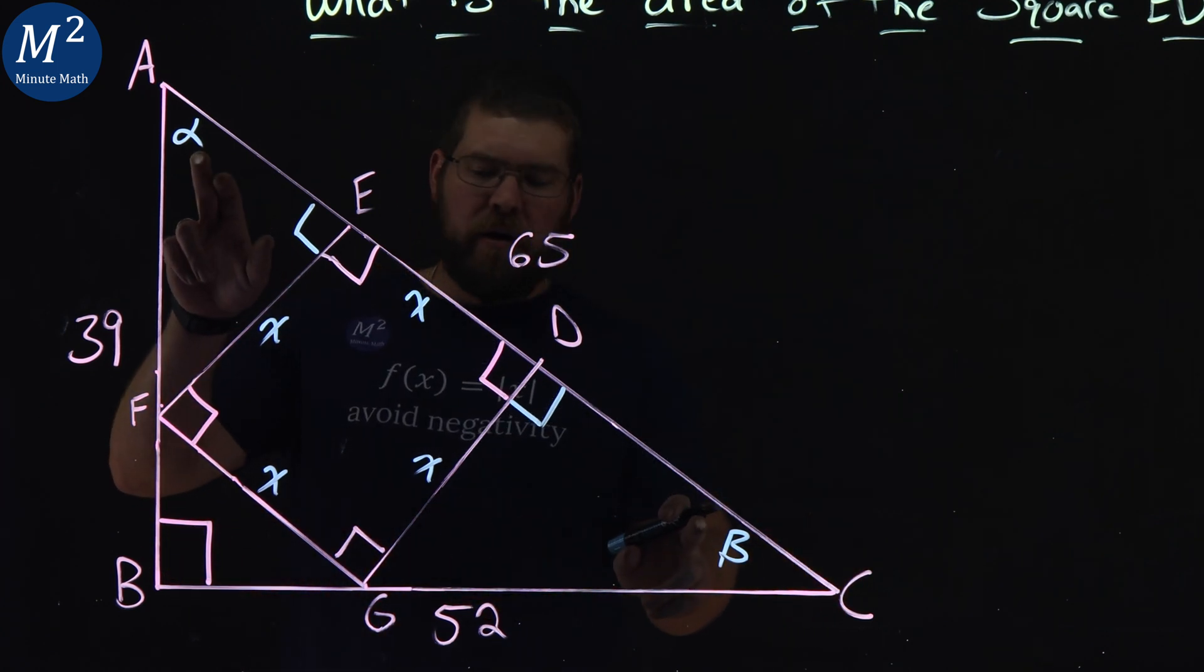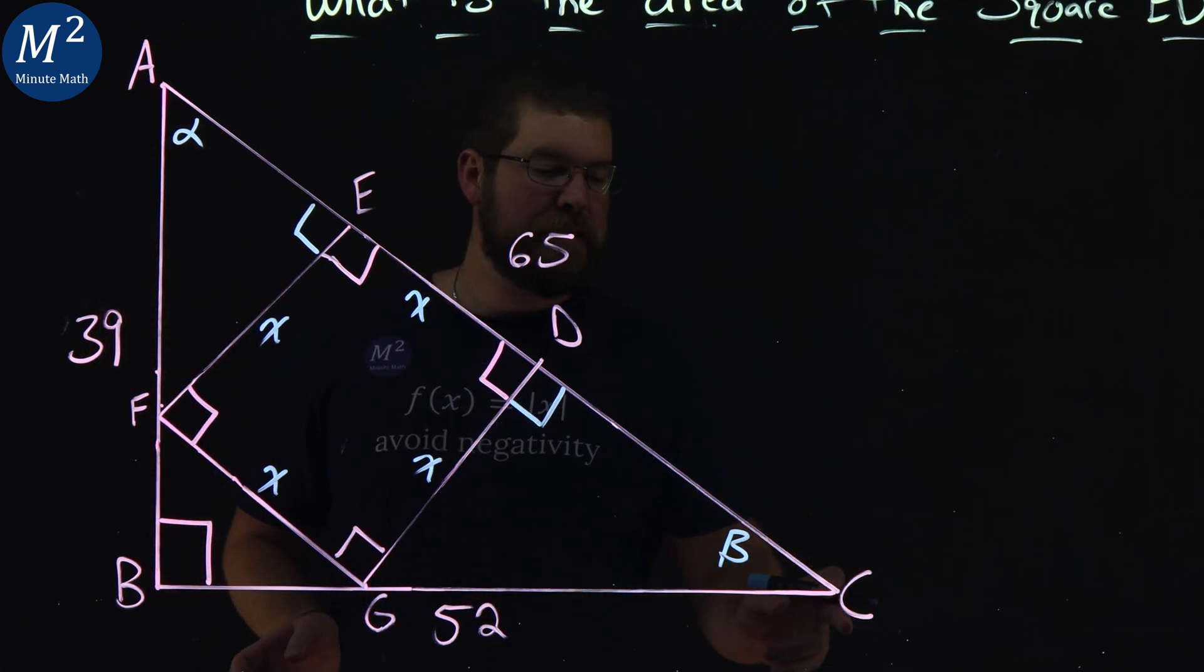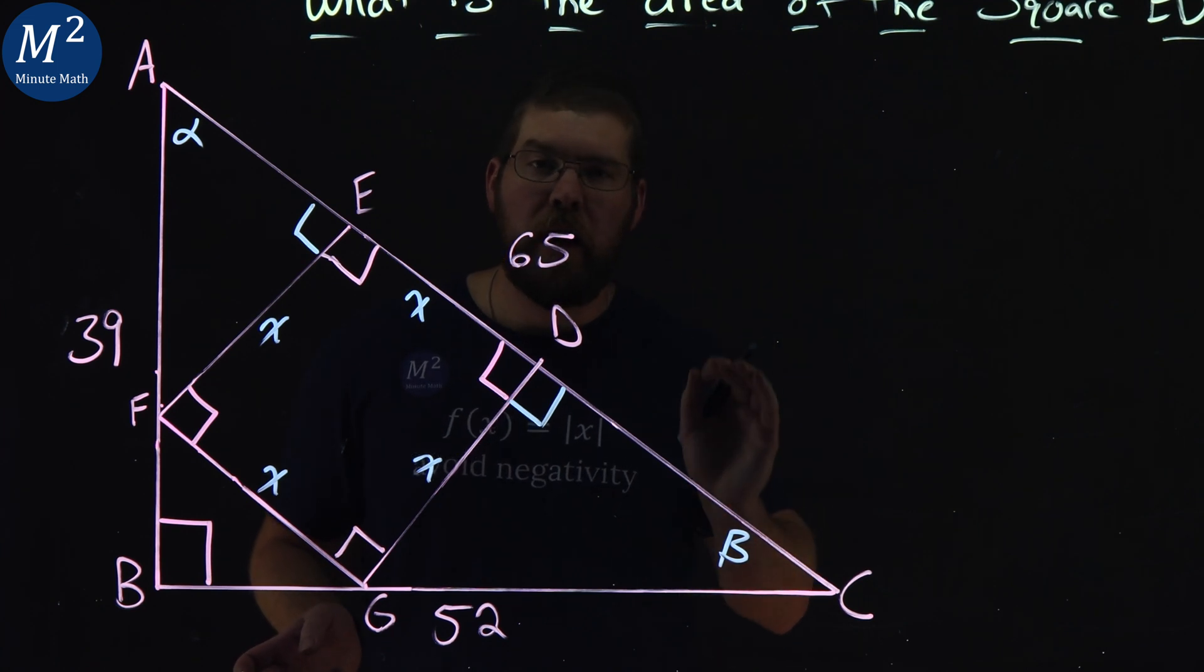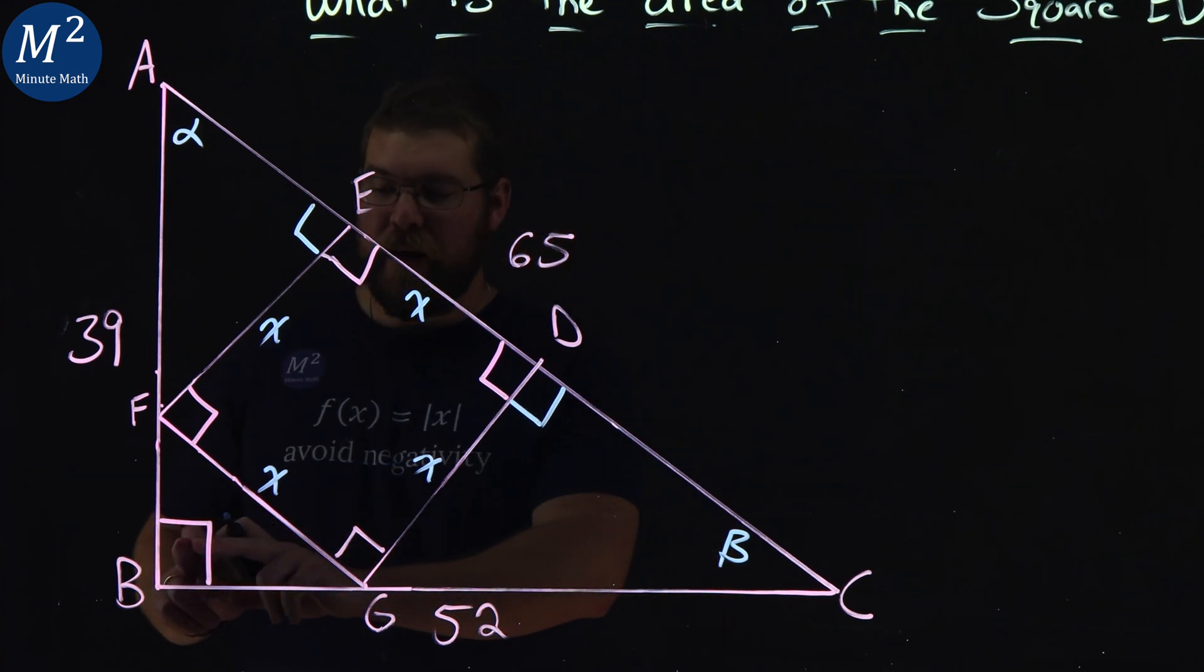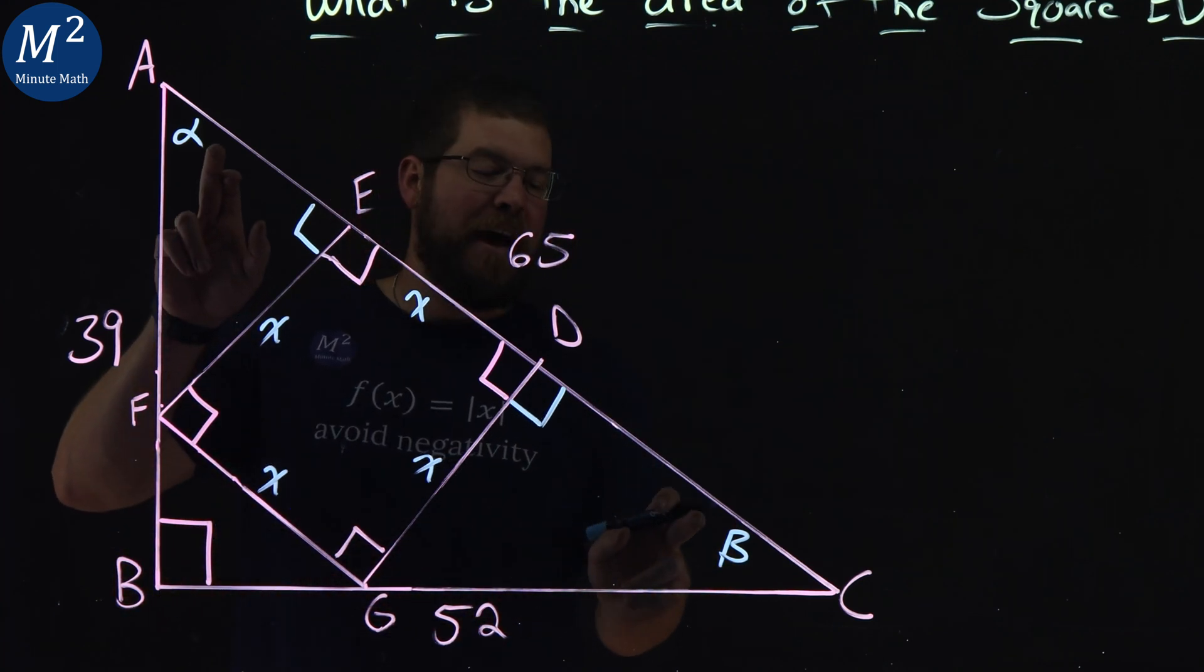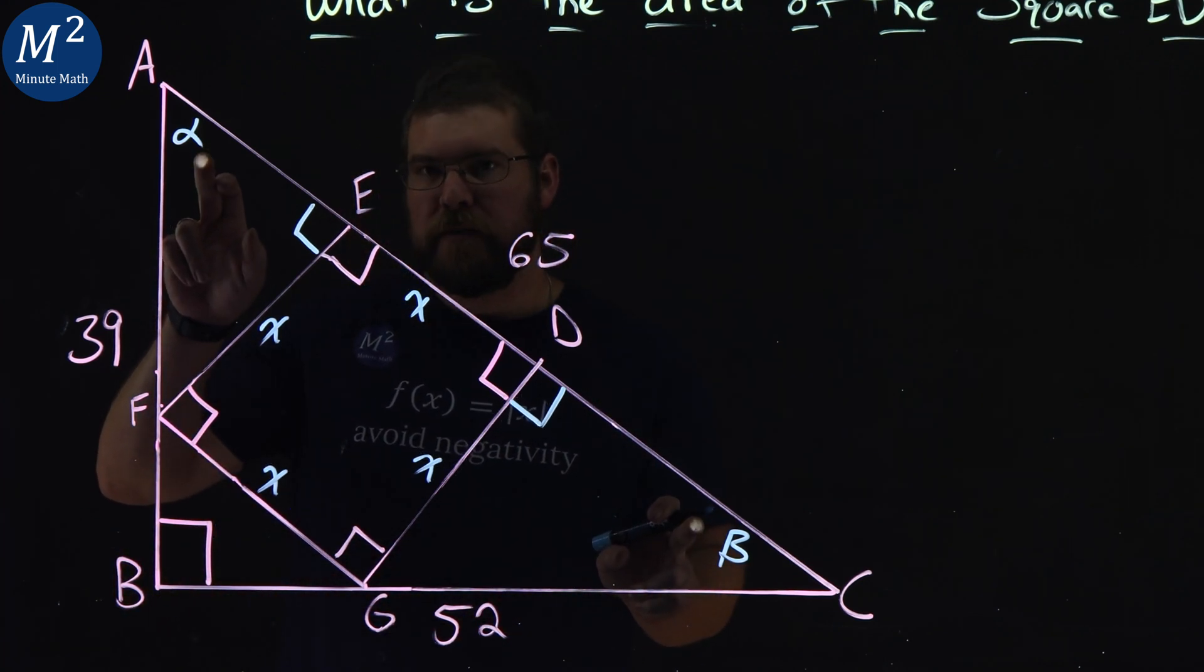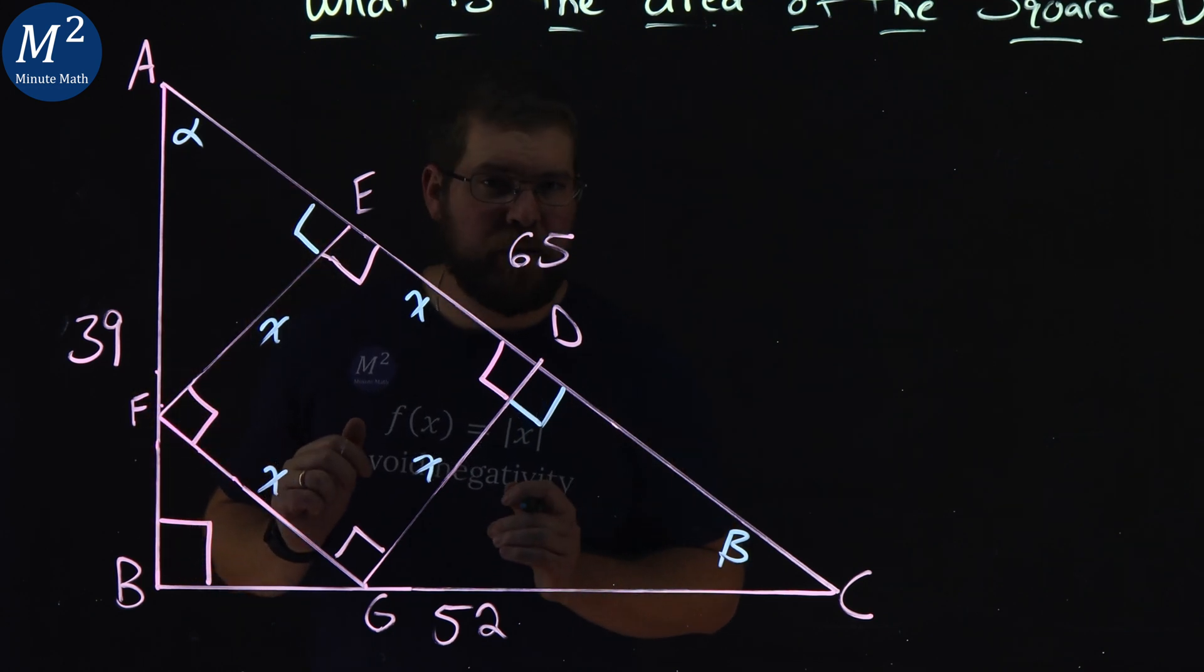Well, alpha and beta on our big triangle ABC, they have to be complementary angles, meaning they add up to 90 degrees. We already have a right angle here, so these two have to add up to 90 degrees. Hopefully you can see where I'm going here.